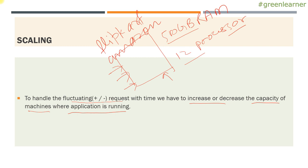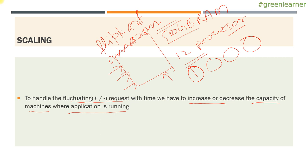So what is the solution for that? When peak season is coming, what can you do? You can increase the size of RAM or increase the number of processors, or you can deploy your application on a machine that has much more capacity during peak seasons. So there are two options to increase the capacity: one is to increase the memory size and processor size in the existing machine, or there is another option where you can add more machines.